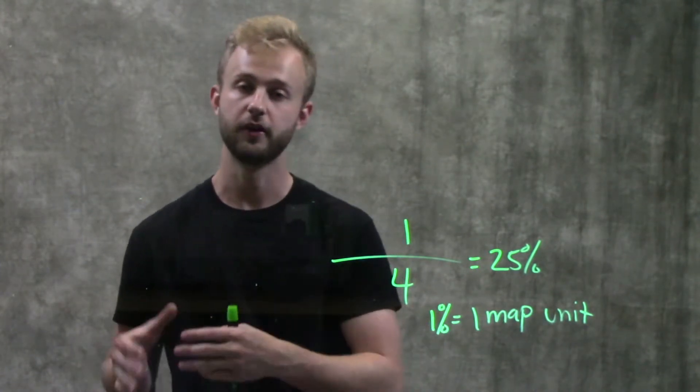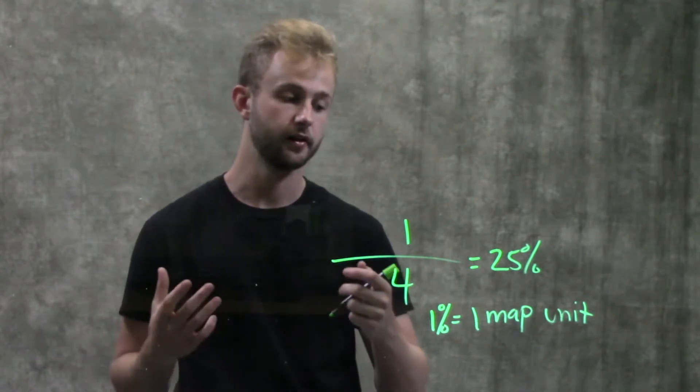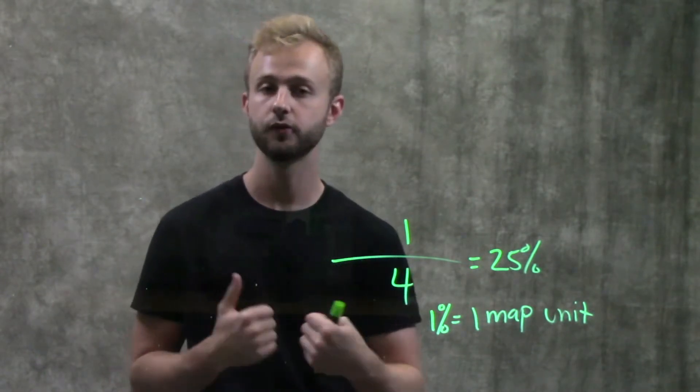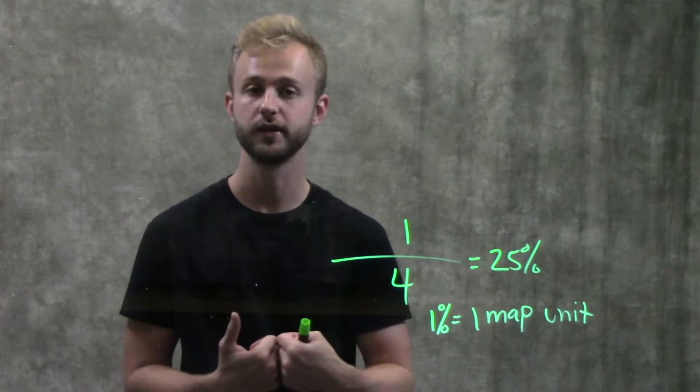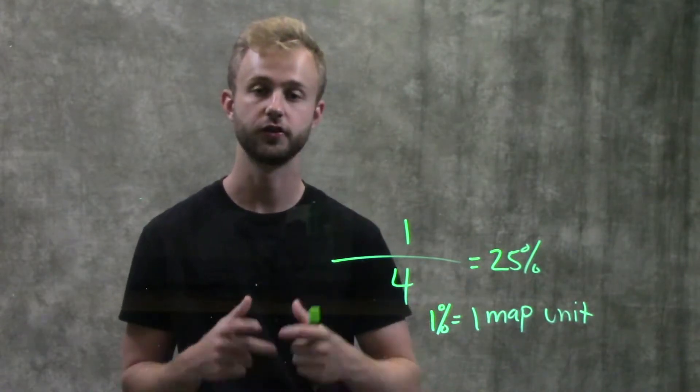In the video where we talked about linked genes, we talked about how genes that are too close together won't have recombination happen between them because there's not enough room, and so those are considered linked.